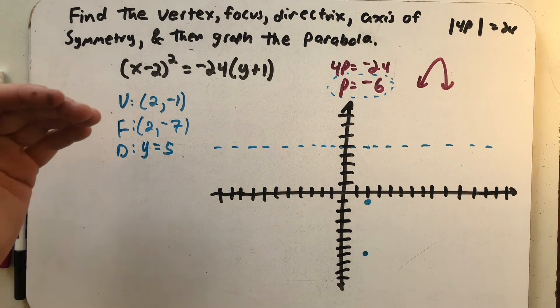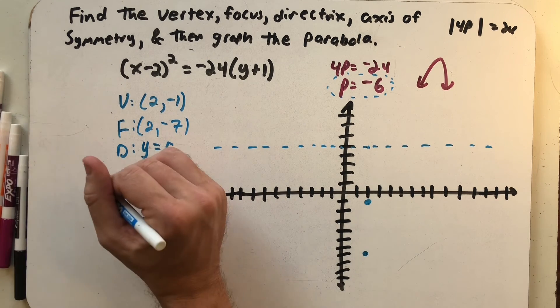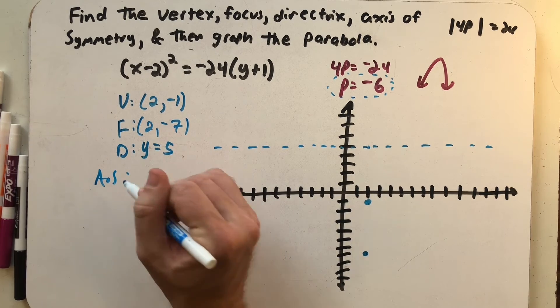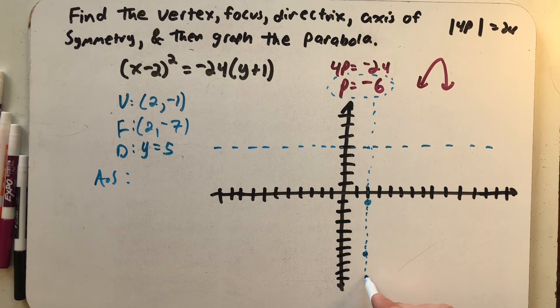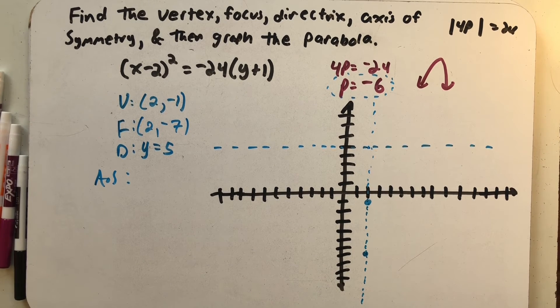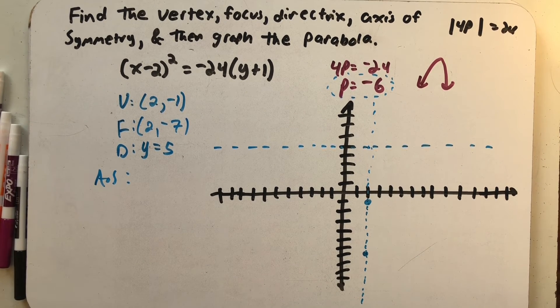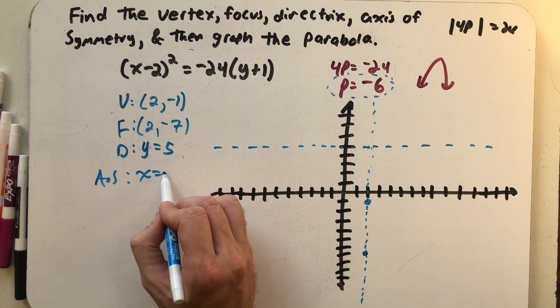Alright, vertex, focus, directrix, and axis of symmetry. That is a line that goes through both the focus and the vertex. And it's perpendicular to my directrix. So there it is. And I can see that runs through x = 2.